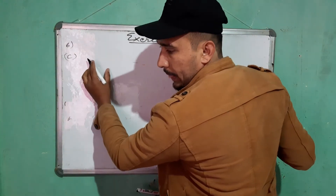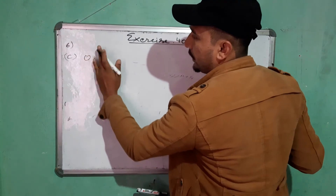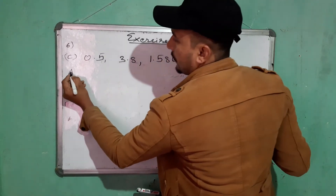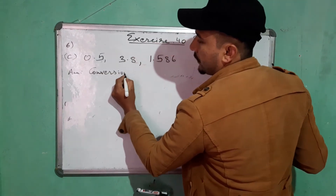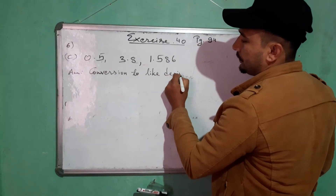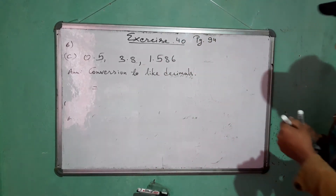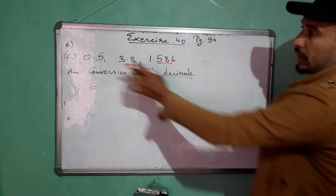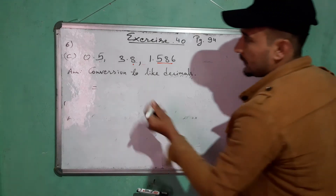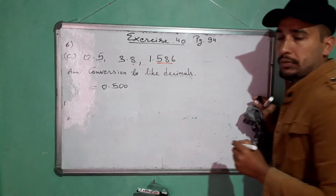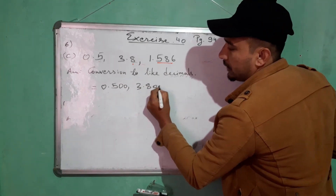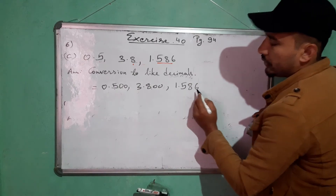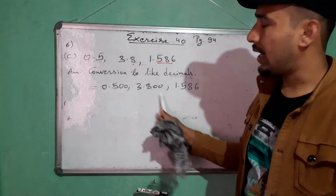Number (c): 0.5, 3.8, and 1.586. Converting to like decimals: the maximum number of digits after the decimal is three (in 1.586). So convert all to three decimal places. 0.5 becomes 0.500, 3.8 becomes 3.800, and 1.586 already has three digits. Now all three have three digits after the decimal — these are like decimals.